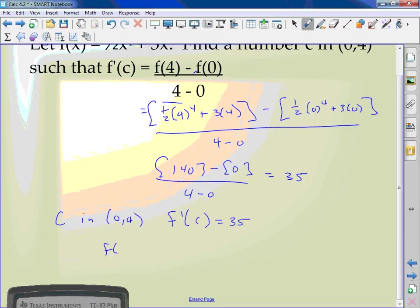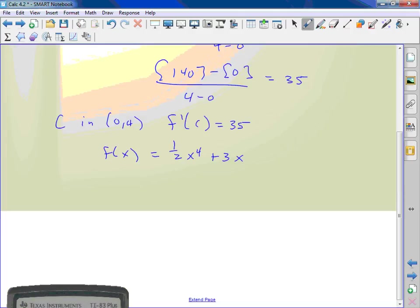Take the derivative of f(x) which was ½x⁴ + 3x. What's the derivative? 2x³ + 3. So we know that 2x³ + 3 has to equal 35. So I have 35 equals 2x³ + 3. Subtract the 3, I get 32, divide by 2, x³ is 16.